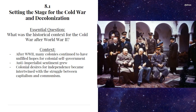The important contextual information before starting 8.1 is this: after World War II, many colonies continued to have unfulfilled hopes for colonial self-government. Places like India, Vietnam, China, and much of Africa had started to petition for independence early in the 20th century — like World War I or before — and a half century later, were still waiting for it. Anti-imperialist sentiment began to grow around the globe with all the rhetoric about beating the Nazis and Imperial Japan to keep the world safe for democracy and freedom. It was outrageous and a little hypocritical to many colonies that the free countries of the world kept so many colonial peoples in captivity. Colonial desires for independence became intertwined with the struggle between capitalism and communism as newly independent nations were courted by the USA and USSR to align themselves with the communist or capitalist struggle.